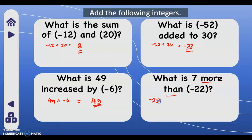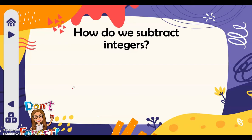They are unlike signs, so we have negative 22 plus 7. We subtract: 22 minus 7 is 15. We copy the sign of the greater absolute value — 22 has a greater absolute value and the sign of 22 is negative, therefore our answer is negative 15.